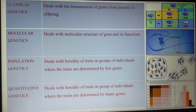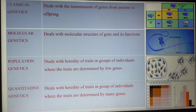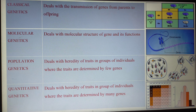Genetics has four major sub-disciplines. The first type is classical genetics, also called Mendelian genetics. This discipline carries all the information explained by Mendel — his experiments, results, and conclusions. It deals with the transmission of genes from parents to offspring and purely with the concepts of Mendel.